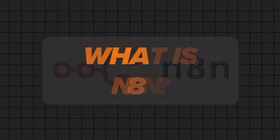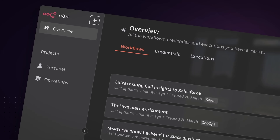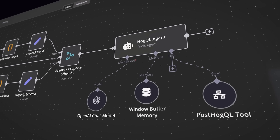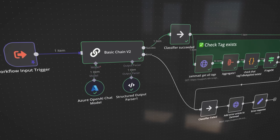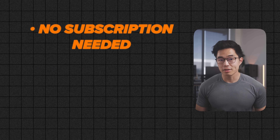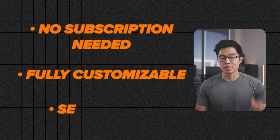So first of all, what is N8N? Well, it's an open source automation tool. Think of it as something like Zapier, but more AI focused with a lot more flexibility. The great thing about it is that there is no subscription needed. It's fully customizable and it can be self-hosted. You can build some insanely amazing and useful automations using it.